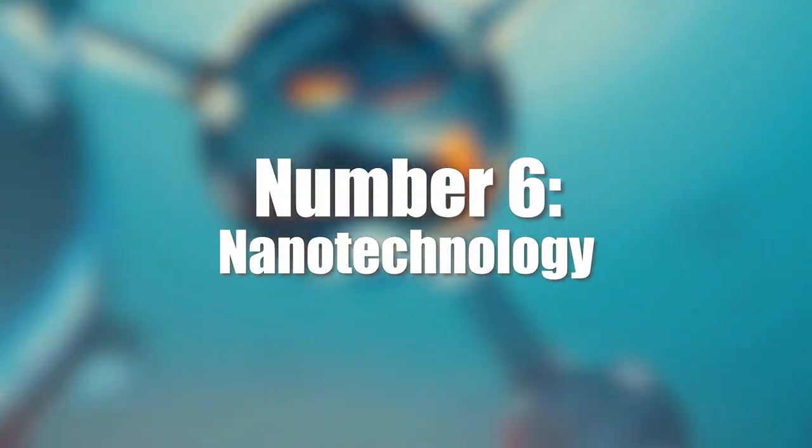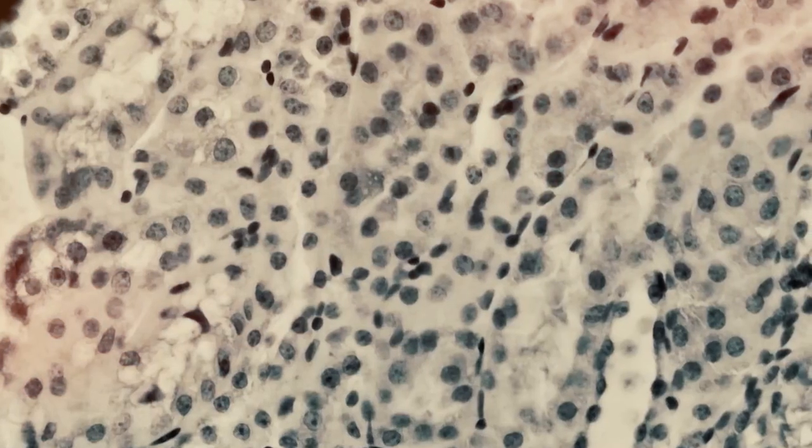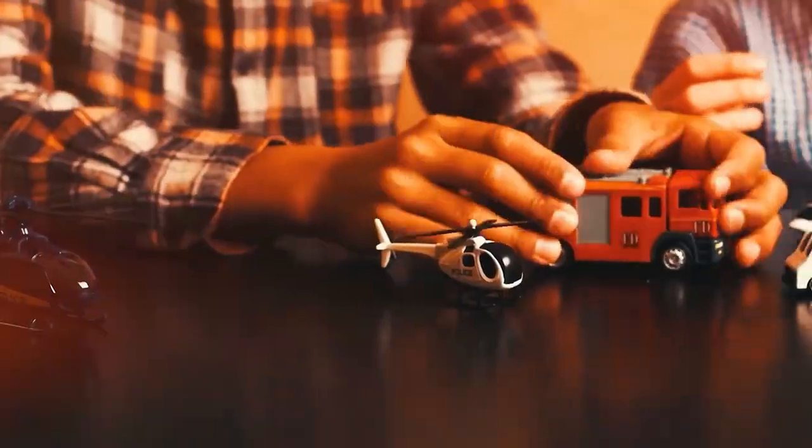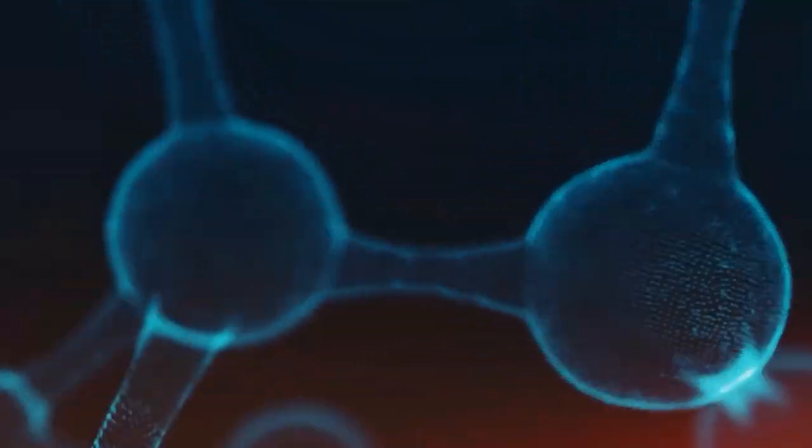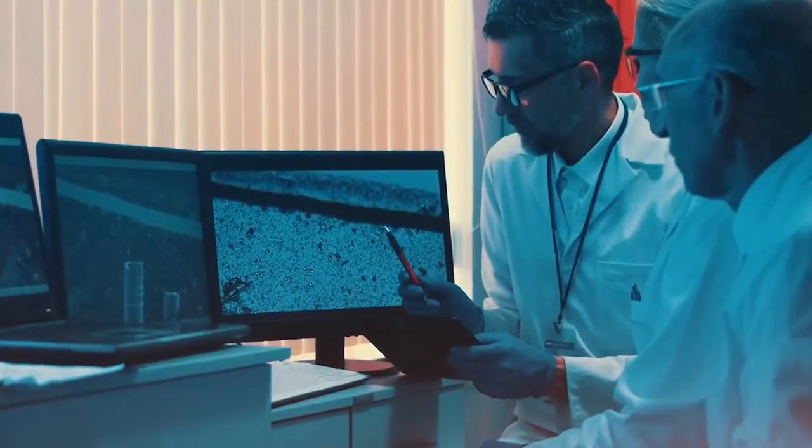Number 6, nanotechnology. Think incredibly small. Nanotechnology works with tiny particles, manipulating individual atoms and molecules to create amazing materials and machines. Imagine clothes that never get dirty, self-cleaning windows, or computers smaller than a grain of sand, but more powerful than today's supercomputers. In medicine, nanorobots could swim through our blood, fighting diseases and repairing cells from within.